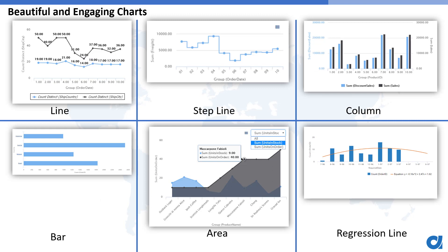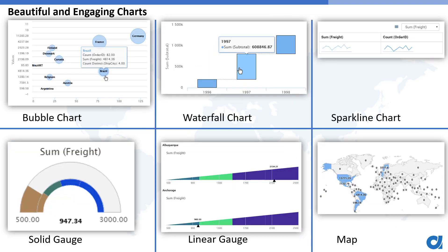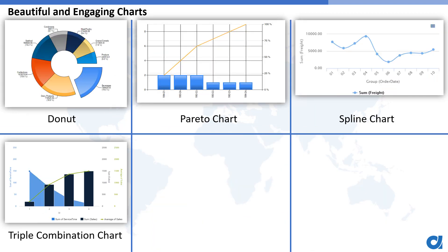The supported chart types include: line chart, step line chart, column chart, bar chart, area chart, regression line, combination chart, pie chart, funnel chart, tree map, scatter map, heat map, bubble chart, waterfall chart, spark line chart, solid gauge, linear gauge, map, donut, pareto chart, spline chart, and triple combination chart. Those are the out-of-the-box chart types provided in the new analytics center.